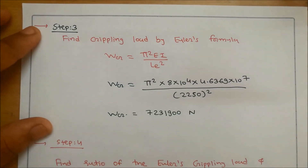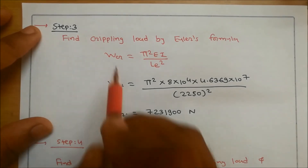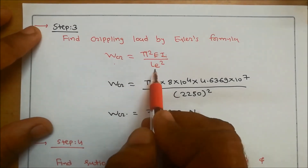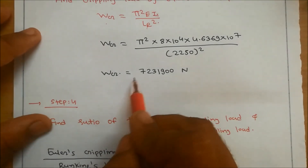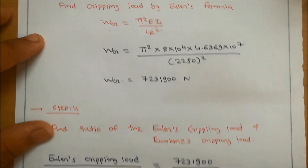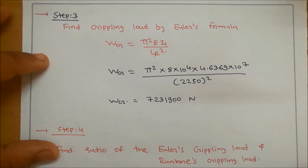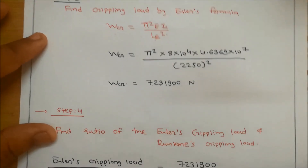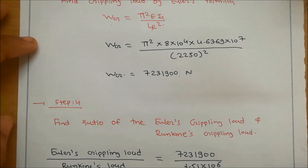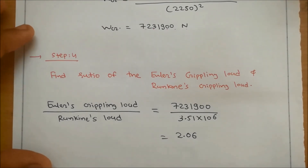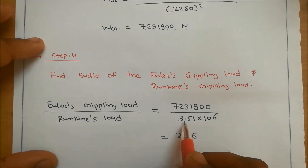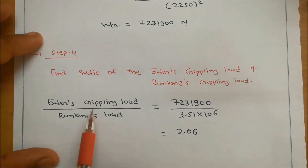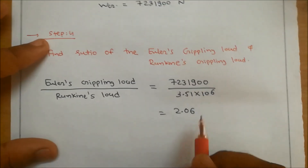Step 3: Find crippling load by Euler's formula: WCR = π²EI / Le². With E = 8 × 10⁴ N/mm², I = 4.6369 × 10⁷ mm⁴, and Le = 2250 mm, WCR = 7,231,900 N. Step 4: The ratio of Euler's crippling load to Rankine's crippling load = 7,231,900 / (3.51 × 10⁶) = 2.06.